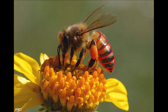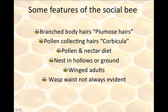Honeybees, like all other insects, have a segmented body, as I've highlighted here. Protecting the internal organ system is a hard, sclerotized exoskeleton, and sensory hairs cover the entire body. Before starting with the anatomy, I'd like to go over some features of the social bee: the branched plumos body hairs, the pollen-collecting hairs on the hind leg, or the corbicula. These animals are pollen-nectar feeders — their diet is primarily pollen and nectar, which they refine into honey. They nest in hollows, or in the ground in some species. The adults are winged, and the constricted waist often seen in wasps is not always evident; a portion of the abdomen extends into the metathorax.